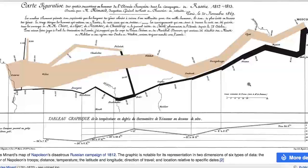The black line coming back gets smaller and smaller, and this is correlated with the temperature and other events. This is like one of the first historical GIS examples that we have.